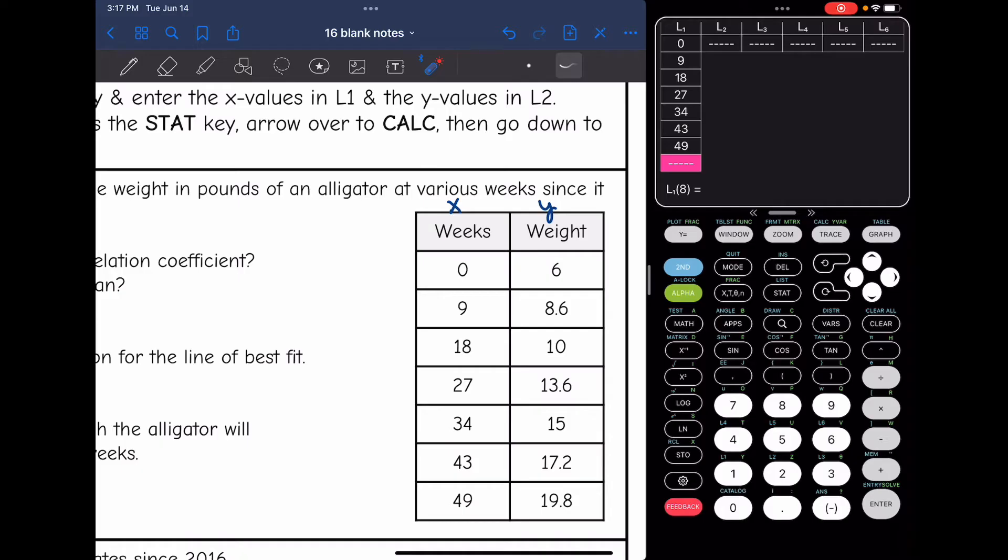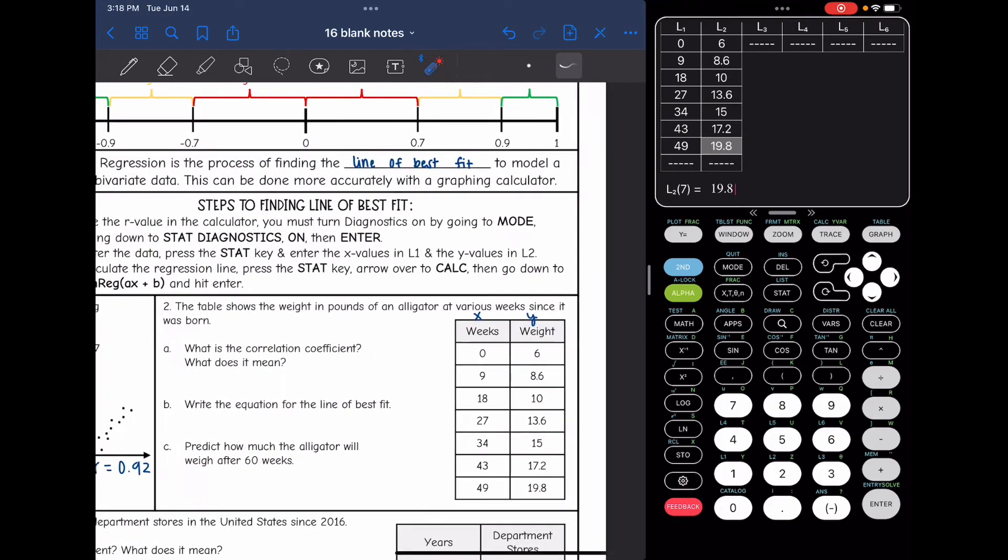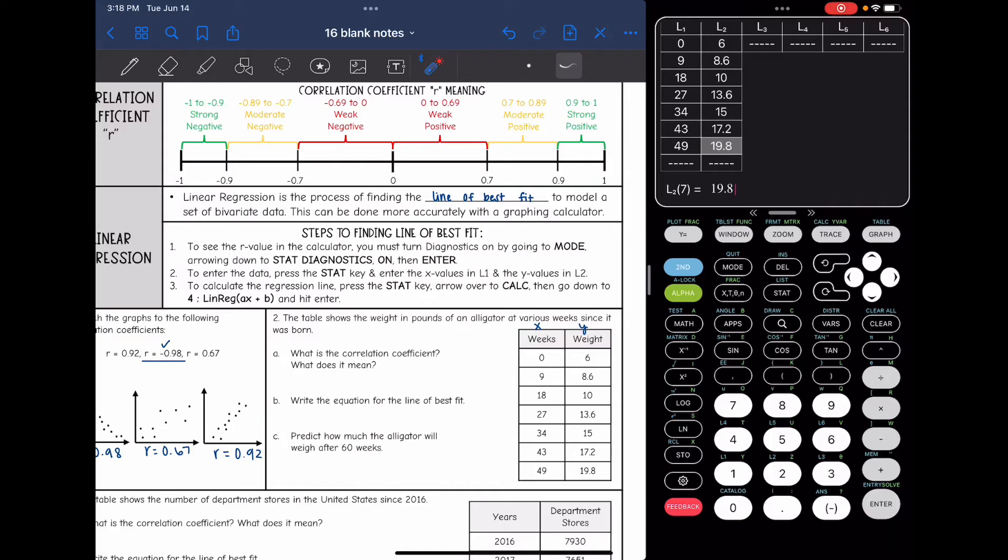And then in L2 is where I'm going to put all the y values. 6, 8.6, 10, 13.6, 15, 17.2, and 19.8. Okay, so I have the data in. I've entered the data.